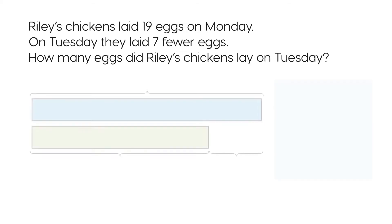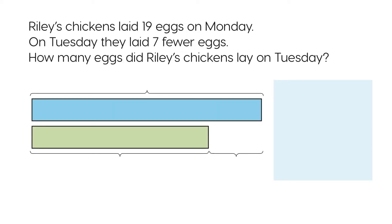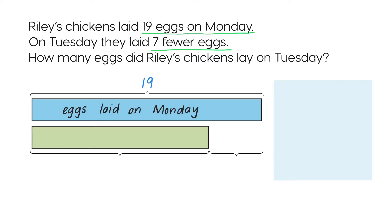Let's use a bar model to help find the answer. We'll use the blue bar to show the number of eggs laid on Monday — 19 eggs were laid on Monday. Write 19 here and label the bar. There were 7 fewer eggs laid on Tuesday, so we can show them using the shorter green bar. Let's label it now — label the difference as 'fewer' and write 7 here.